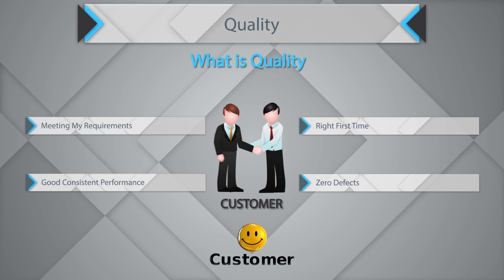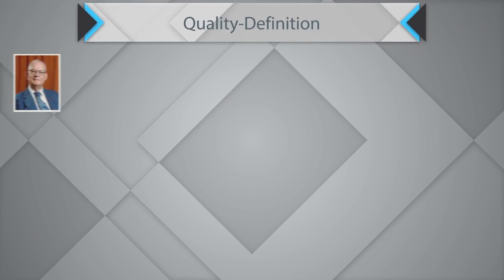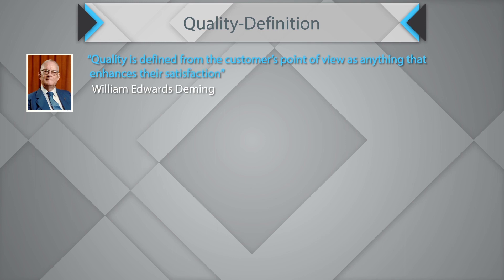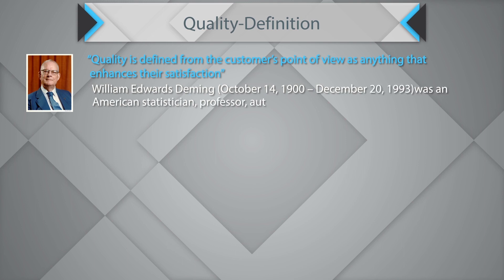When you provide products as per customer requirements, you have happy customers, and happy customers means profitable business. Let's look at some definitions of quality. Dr. William Edward Deming defines quality as: 'Quality is defined from the customer's point of view as anything that enhances their satisfaction.' This clearly articulates that quality is about adhering to the customer's viewpoint and devising systems and processes to enhance customer satisfaction.